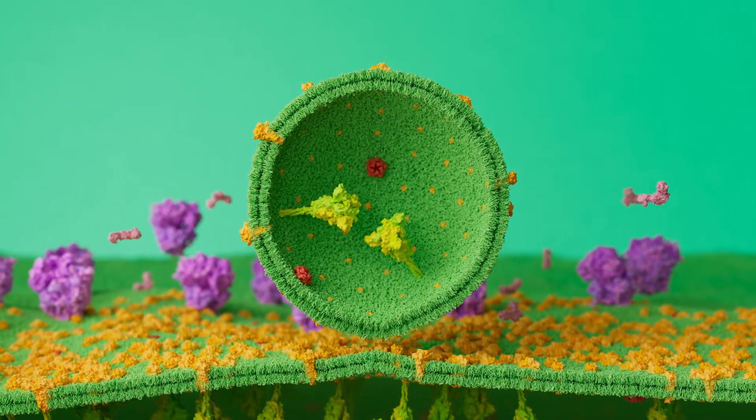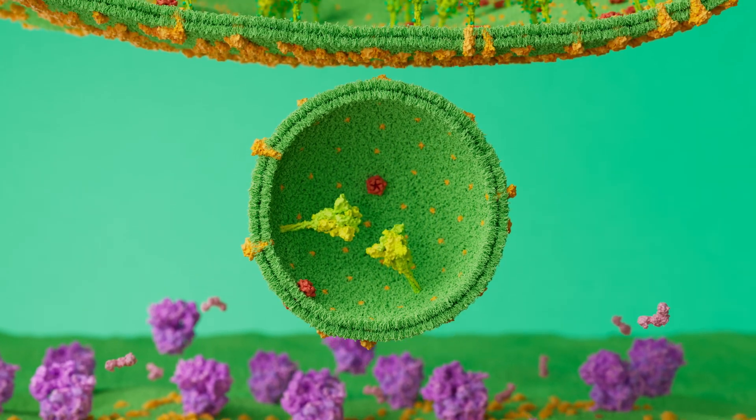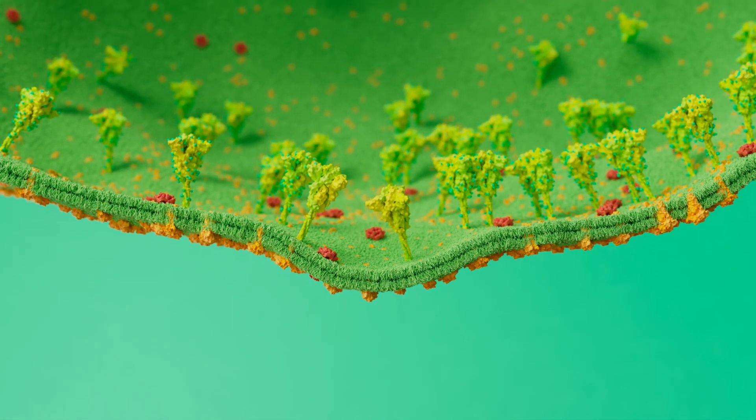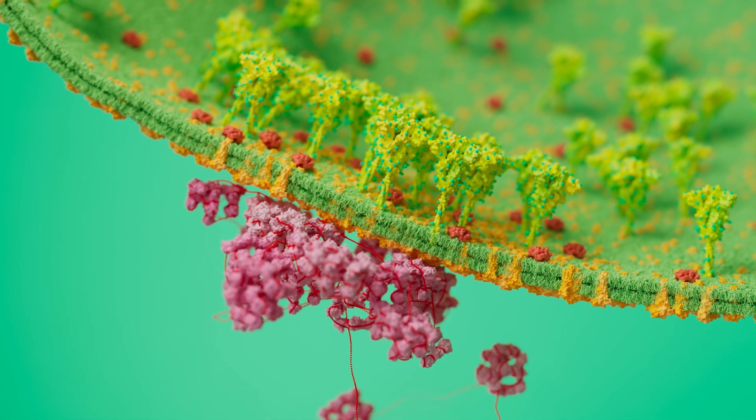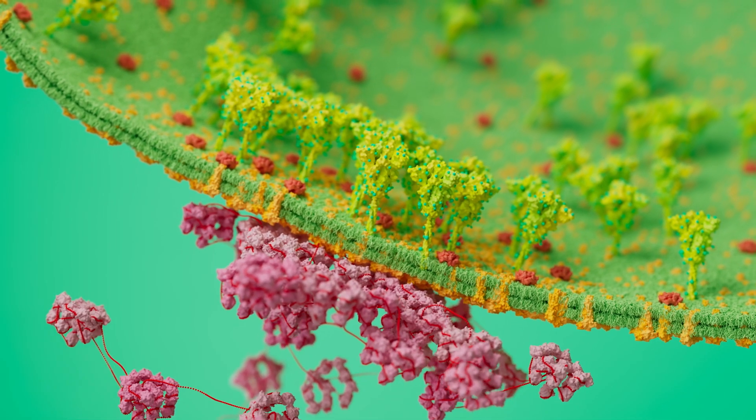After the spike, envelope, and membrane proteins have been made, they go to a different part of the cell. There, the membrane proteins are able to catch the nucleocapsid proteins and viral genome.